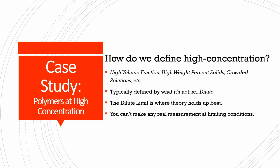Now our case study: polymer solutions at high concentration. How do we define high concentration? High volume fraction, high weight percent solids, concentrated solutions — these terms all refer to what they're not, which is dilute. The dilute limit represents a concentration regime where particles behave ideally, without interactions between multiple particles, and models for size and Brownian motion hold up well. The dilute limit is a theoretical limit — you can't make actual measurements at a limiting condition.